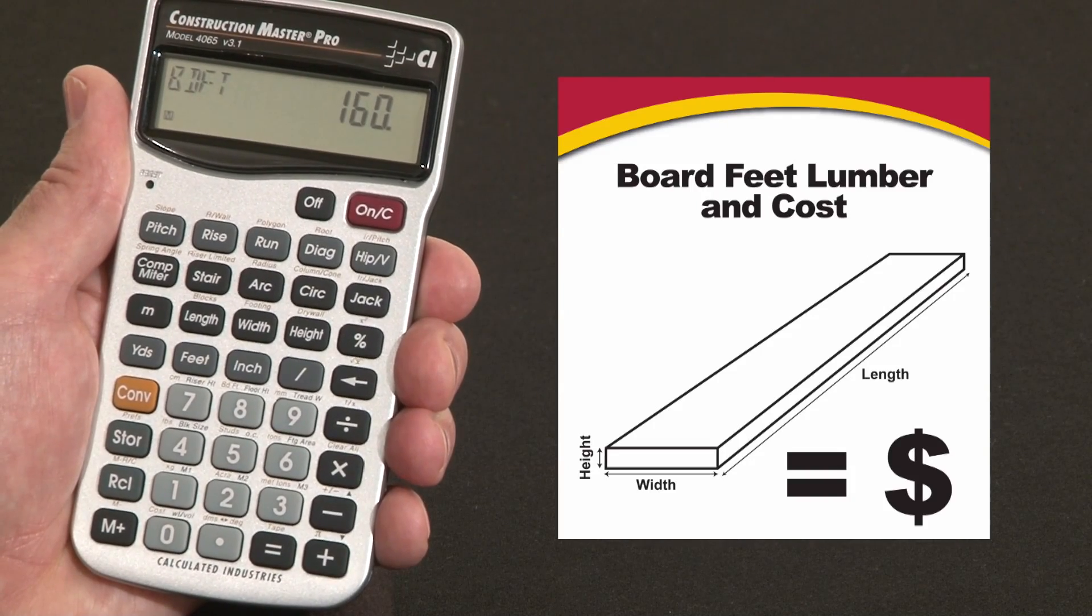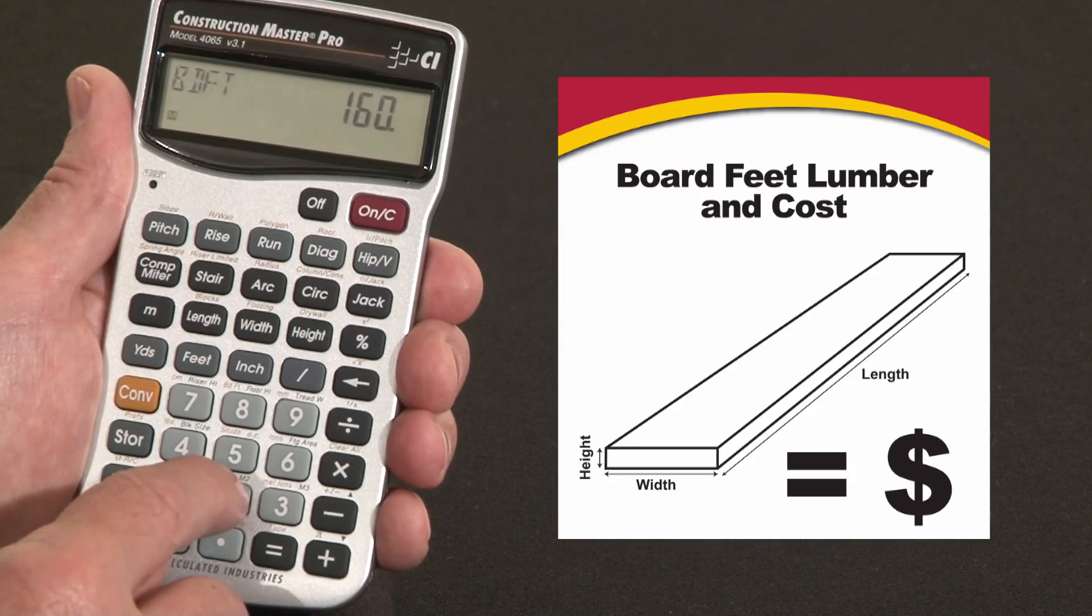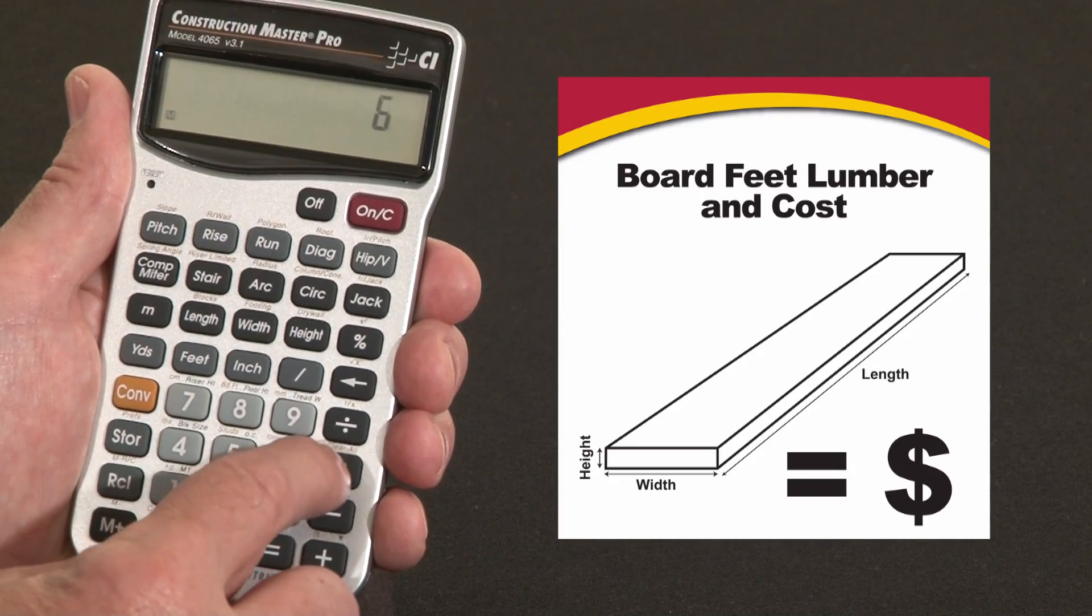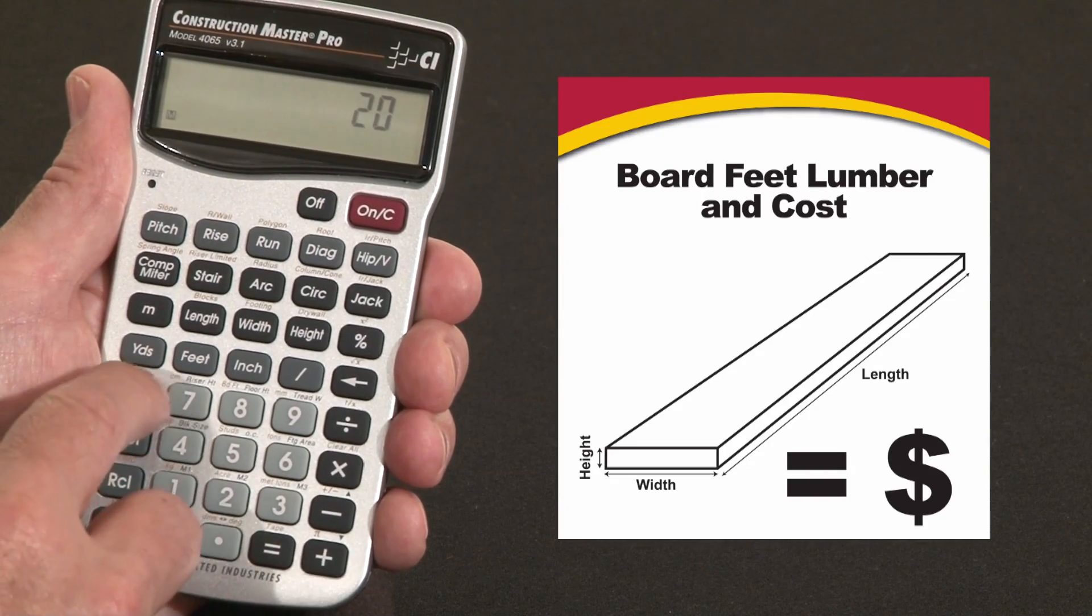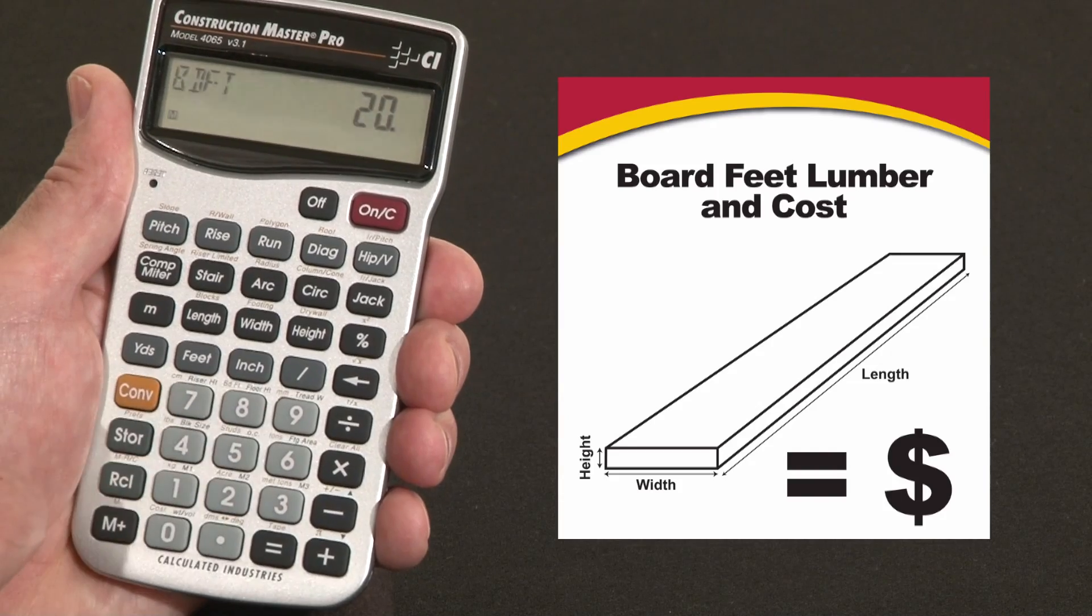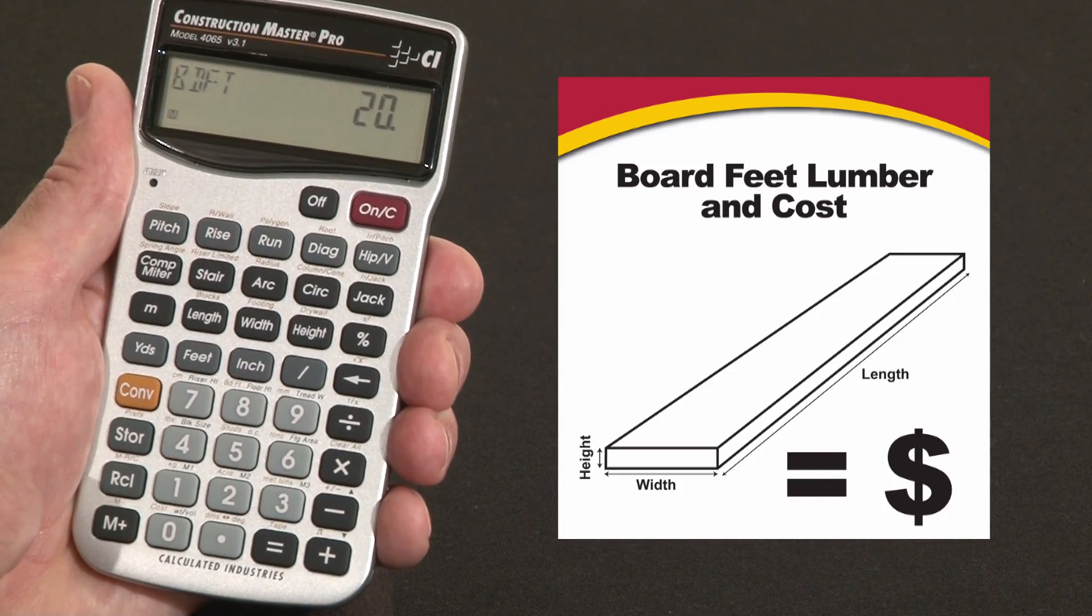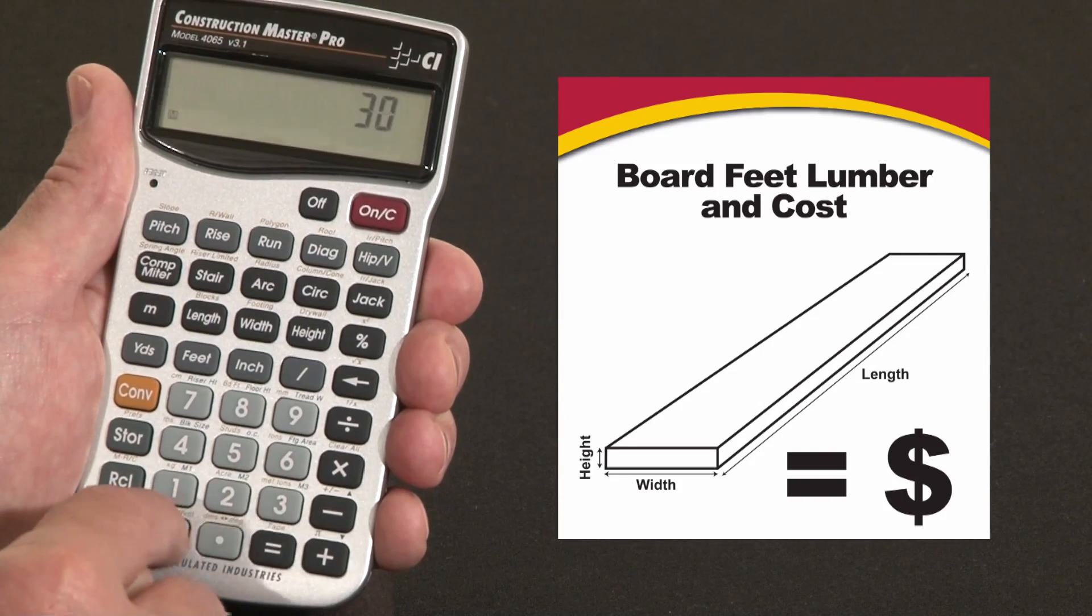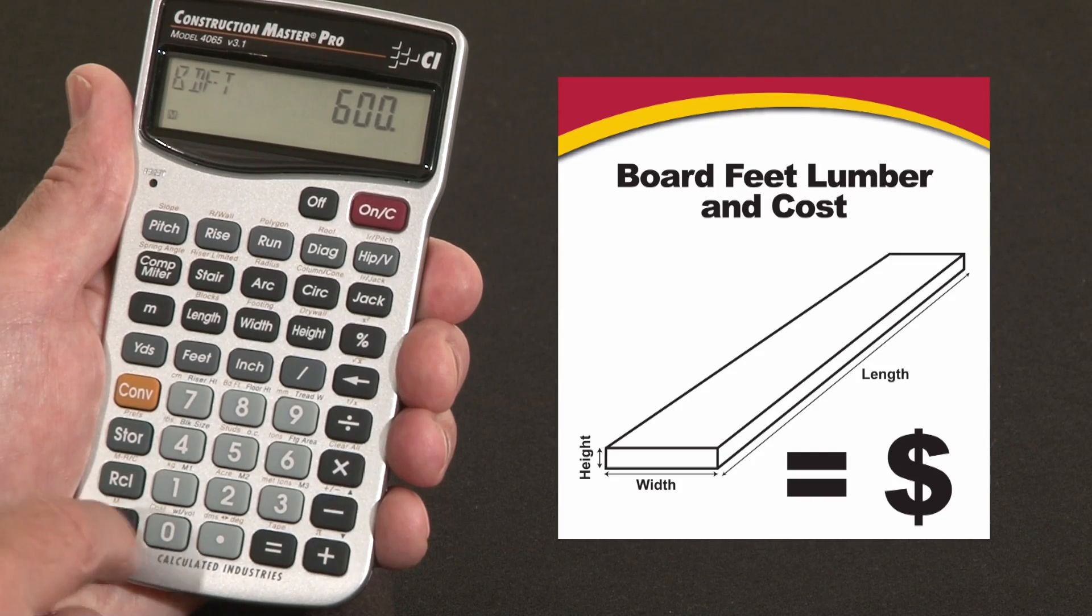And I need 30 pieces of 2x6x20. 2x6x20 convert board feet. And now I can say I need 30 pieces of that, times 30 equals 600 board feet. Put that in the memory.